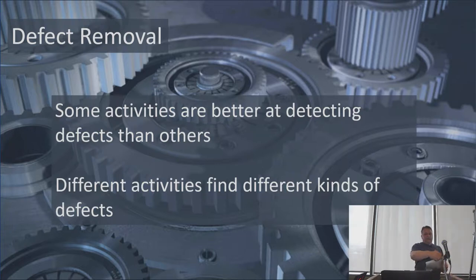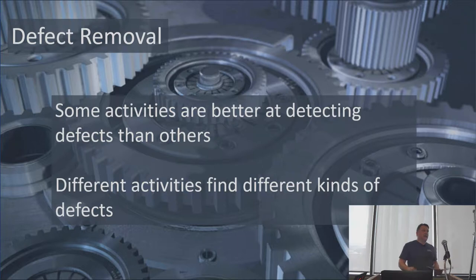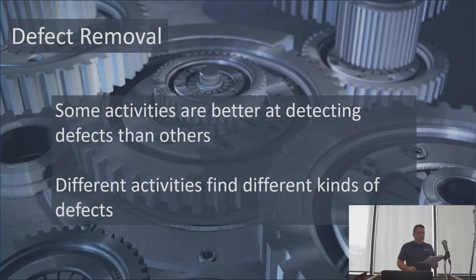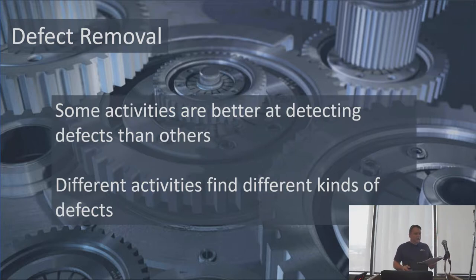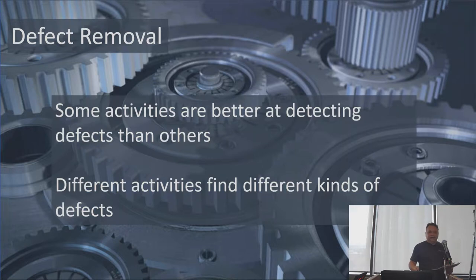As far as removing defects goes, some activities are better than others at detecting them, and different activities find different kinds of defects. For example, missing functionality is not normally discovered by a unit test — if the developer knew about that functionality, they'd need to know about it to write a test for it. Similarly, a misunderstanding about how to properly use an external API won't be found with a unit test. Static analysis wouldn't find either one of those.